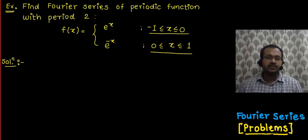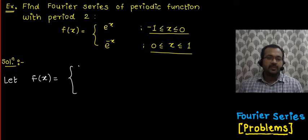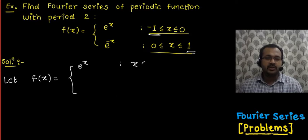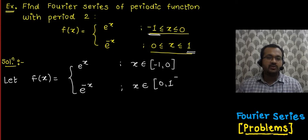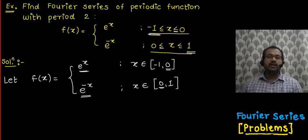To find the required Fourier series, we consider the function once again. f(x) is defined in the interval minus 1 to 1: the first part is e raised to x when x lies in minus 1 to 0, and the second part is e raised to minus x when x lies in 0 to 1. Substituting x = 0 in both cases gives the same value, so equality holds in both intervals.